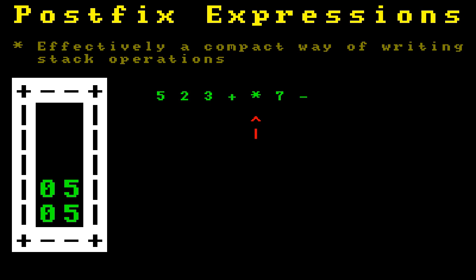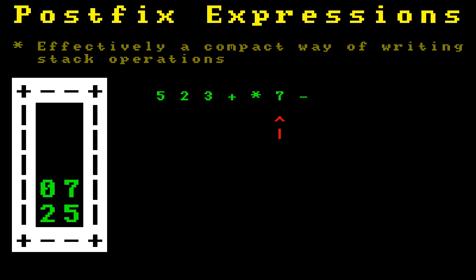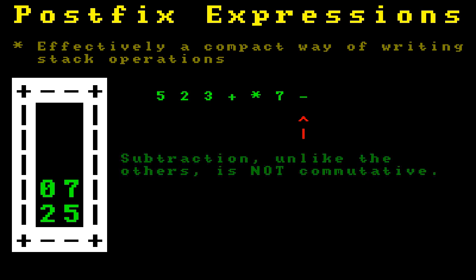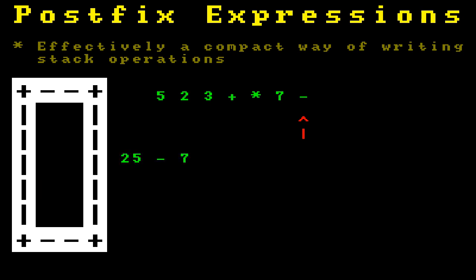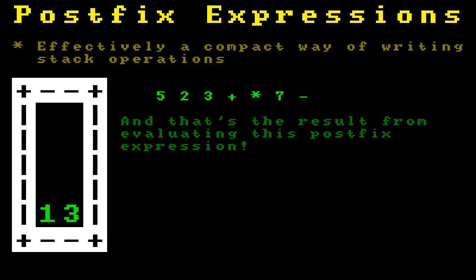Then we see the operator asterisk, which tells us to again pop the top two items, but this time multiply and push it back. So that's 5 times 5, which is 25, so we push 25. Then we see 7, so we push to the top of the stack, and we use subtraction. Now subtraction, unlike the previously mentioned operators, is not commutative — the order matters. 25 minus 7 is not the same as 7 minus 25. Typically, the thing on the top of the stack is considered on the right of the operator, and the thing below it is on the left. Doing this, we get 25 minus 7, which gives us 18, and that's the result from evaluating this postfix expression.